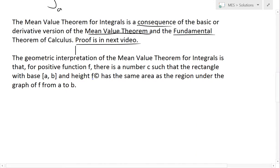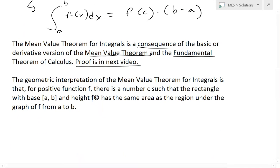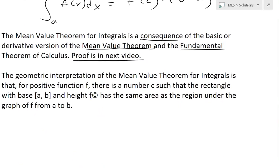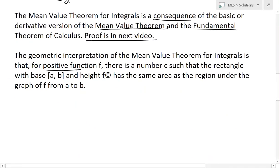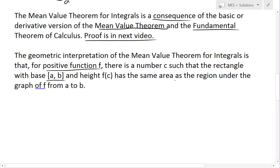Basically, if you look at this in the geometric way, the geometric interpretation of the Mean Value Theorem for Integrals is that for a positive function f, there is a number c such that the rectangle with base [a, b] and height f(c) has the same area as the region under the graph of f from a to b.